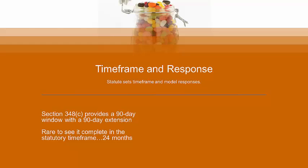Time frames are set statutorily. Section 348(c) provides a 90-day window — remarkable that Congress thought an administrative agency could accomplish a technical review in 90 days — and allows a 90-day extension if needed, for 180 days total. In reality, 180 days is not enough time to conduct a review and gather additional data. The FDA has discretion in enforcing the statute, as all administrative agencies do. Section 348(c) is a guideline; you're not going to successfully challenge the agency for missing the 180-day time frame. Realistically, it's going to take a couple of years.